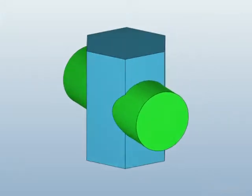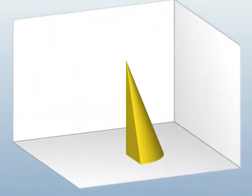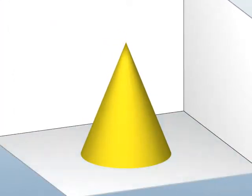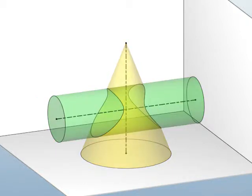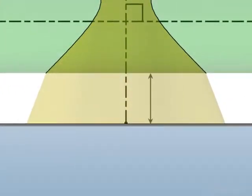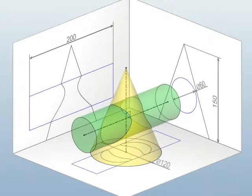Hi friends, welcome back. Let's crack some more problems on intersection of solids using the cutting plane method. We have a right circular cone resting on HP. A cylinder penetrates the cone with its horizontal axis intersecting the axis of the cone at right angles and at a distance 30 millimeters above the base of the cone. The cone is resting with its base on HP.